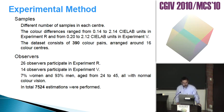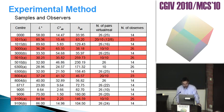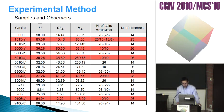Twenty-six observers participated in Experiment R and approximately 14 observers in Experiment B — 7% women, 93% men, aged 24 to 45, all with normal color vision. In total, 7,524 estimations were performed. Approximately 26 pairs per color center were used in Experiment R and 10 in Experiment B.